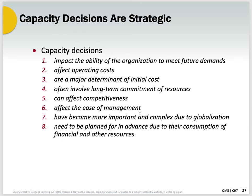Capacity decisions tend to be a little bit more strategic. Usually in most companies, especially consumer product companies, three years is a strategic decision and one year is a tactical decision. What's the impact on the organization's ability to meet future demands? How does it affect operating costs? It's one of the major determinants of initial costs and involves a long-term commitment of resources. It can affect your competitiveness and ability to manage. Really, what you're trying to do is say: do I think my business is going up? Do I need to expand before it's a pressing need and I'm cutting orders? Then you have to navigate and manage it well.